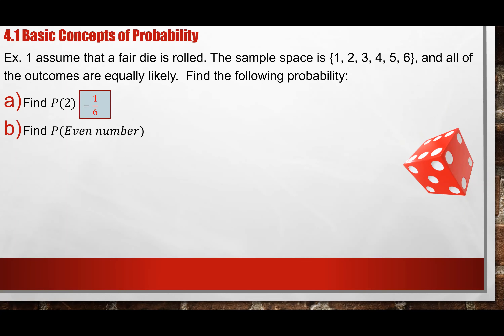What is the probability of rolling an even number? Number two is even, number four is even, and number six is even — three even numbers out of six sides. So three over six, which reduces to one-half. You need to reduce it, otherwise ConnectMath will say your answer is not in reduced form. One-half is 0.5 in decimal form.